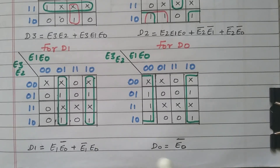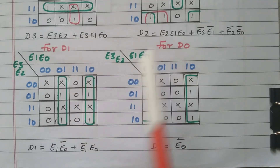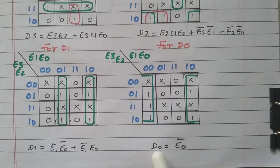So now we have the expressions for D3, D2, D1, and D0. We will now go to the logic diagram to implement these four functions.